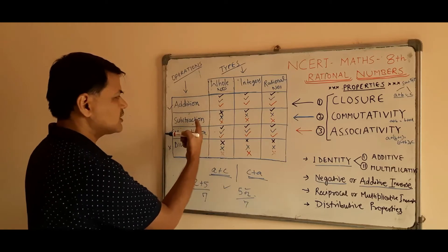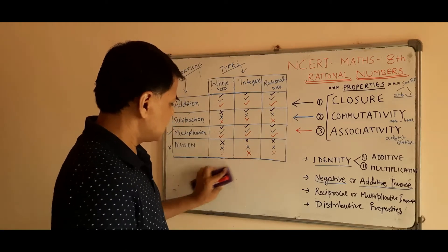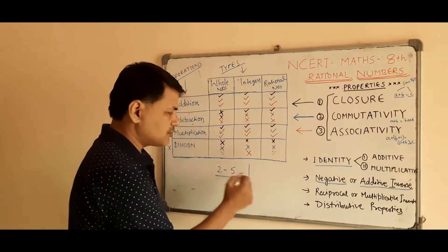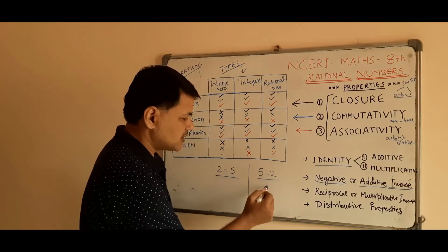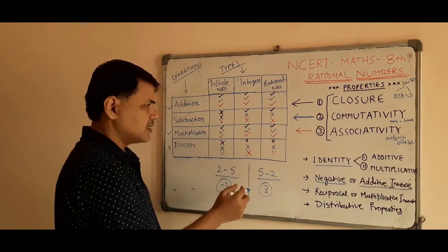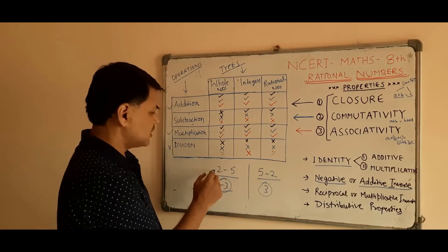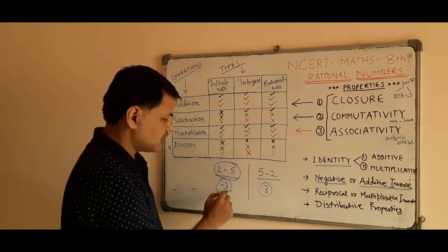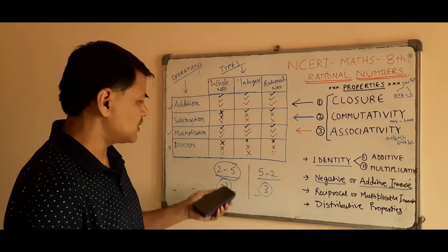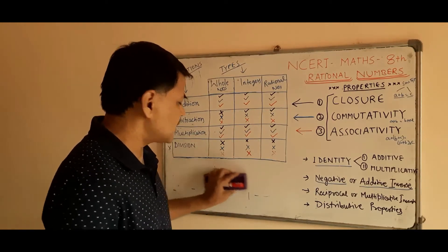In case of subtraction, commutative property is false. Let's check: take two whole numbers, 2 minus 5. Now change the position: 5 minus 2. The result here is minus 3, and there it is 3 — they are not the same. So for whole numbers, integers, and even rational numbers, subtraction is not commutative, because changing the position changes the value.